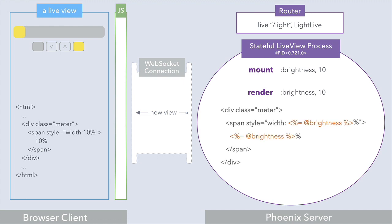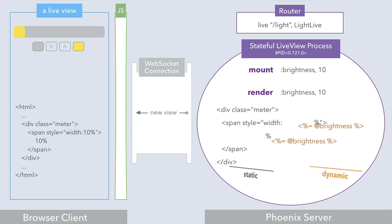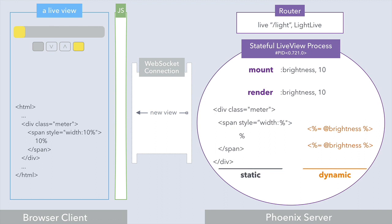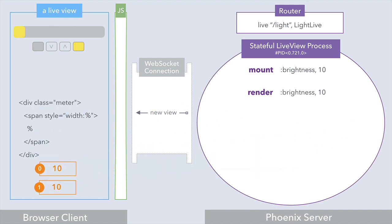Let's zoom in and focus on this section of our live view template. Since brightness is interpolated in two EEX tags in this template, we have two dynamic values — values that may or may not change. The rest of the template is static; it will never change. Live view splits this template into two parts: the stuff that's dynamic and the stuff that's static. Both dynamic values evaluate to 10, the initial brightness, at position index 0 and index 1. Both parts are sent to the client, and the JavaScript provided by the live view library weaves the static and dynamic parts together.